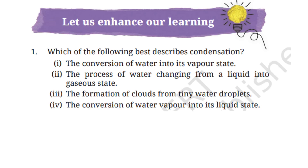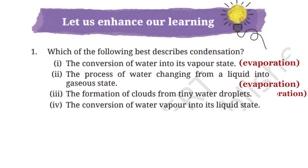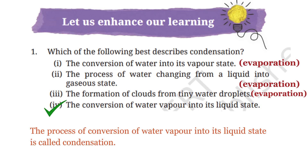Option one: the conversion of water into its vapor state — that is evaporation, not condensation. Option two: water changing from a liquid into a gaseous state — that is evaporation again. Option three: the formation of clouds from tiny water droplets — that is evaporation again. Option four: the conversion of water vapor into its liquid state. So students, option four is the correct answer, because the process of conversion of water vapor into its liquid state is called condensation.